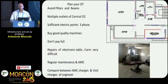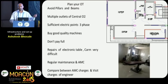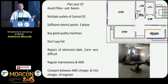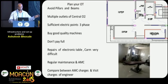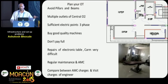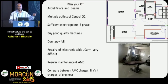Plan your OT and avoid pillars and beams. Invariably you will end up with an OT with a pillar because construction made by architects is for residential purposes. Think about multiple central O2 points, sufficient electric points — especially three-phase — as these are not specified by the architect beforehand. Buy good quality machines but don't pay in full at the first go, because getting maintenance people to your rural area is very difficult.